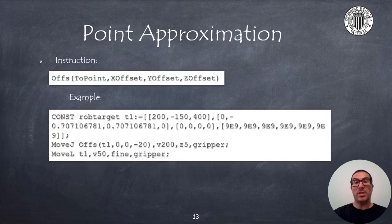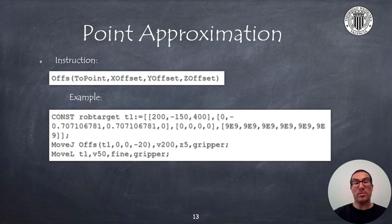When following a trajectory, it is usually convenient to carry out an approximation to a given point. This can be done with an Offs instruction, which allows you to set a point offset relative to the point's own coordinate frame. For example, we can define a non-linear approach movement 20 mm above from the point of interest T1 with the MoveJ instruction at a fast speed with a Z5 position. Once the fly-by-point is reached, then we can move with a linear motion to T1 with a slower speed at a much greater precision.